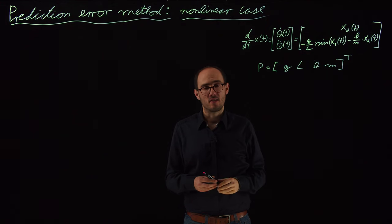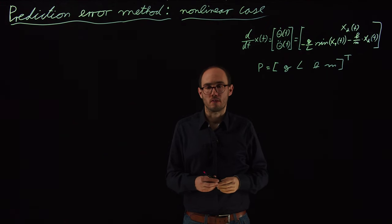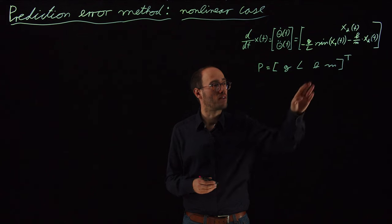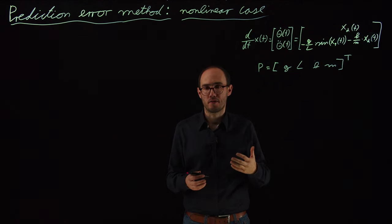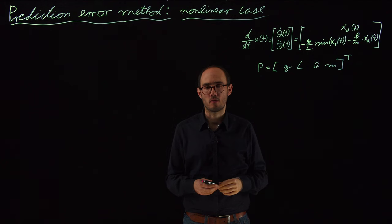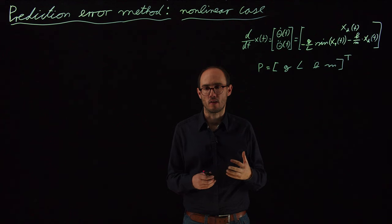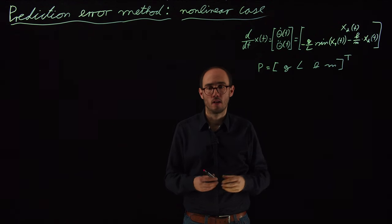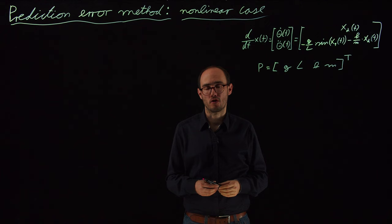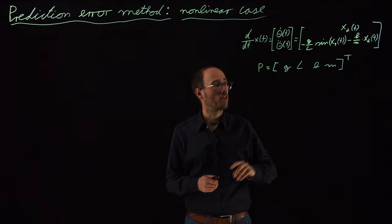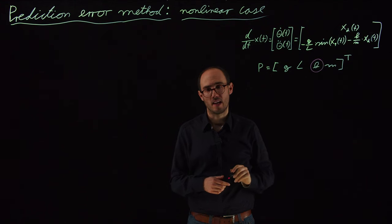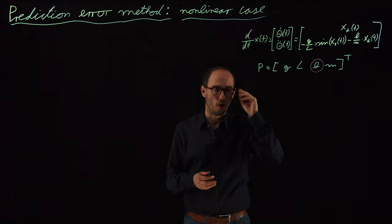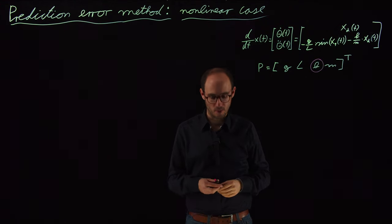What normally is not so easily measurable or not so easily describable is this friction coefficient b. Maybe if you have specialized knowledge in mechanical engineering, you might be able to get an initial guess on b, but normally it's really hard to model this parameter coefficient based on first order principles. So that's why in this video, we are going to discuss how we can get this parameter b from data, so from an experiment.